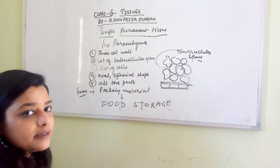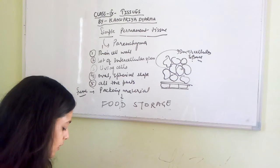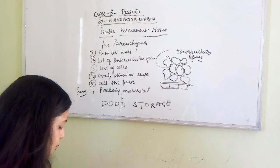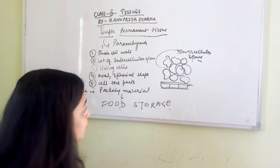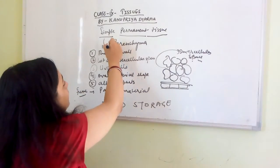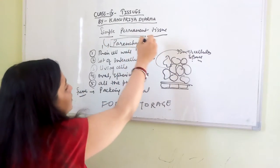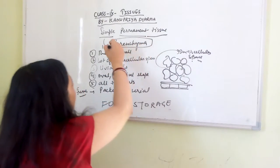Now let's start with the important features of parenchyma cells. First, they are made up of a thin cell wall. Second, there is a lot of intercellular space — intercellular means between the cells. They are also living cells.